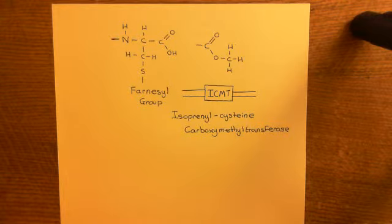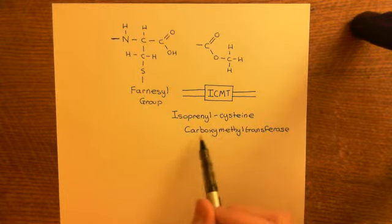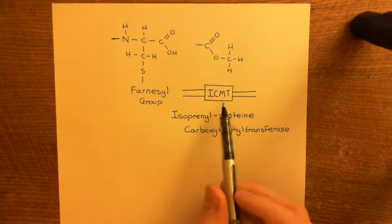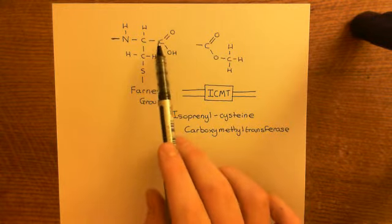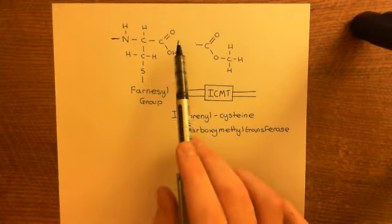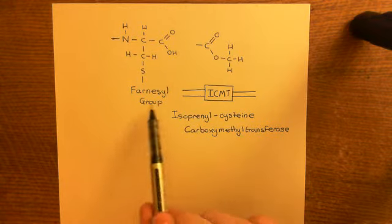RAS converting enzyme 1 participates in AAX proteolysis — it removes the final three amino acids from the RAS polypeptide, making the cysteine residue the final amino acid. The isoprenyl cysteine carboxymethyl transferase then transfers a methyl group onto the free carboxylic acid group of this now-terminal farnesylated cysteine residue.